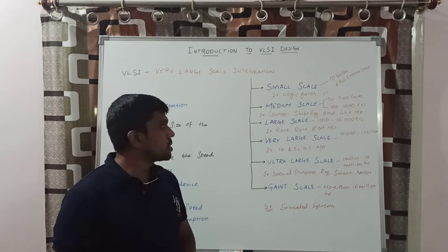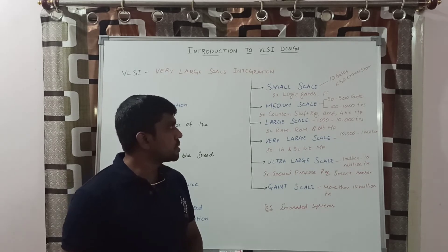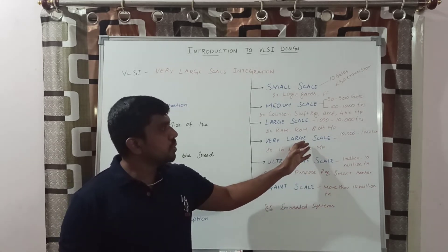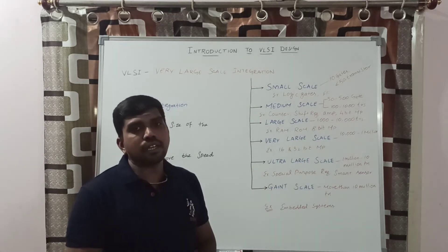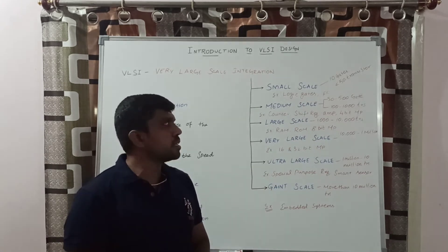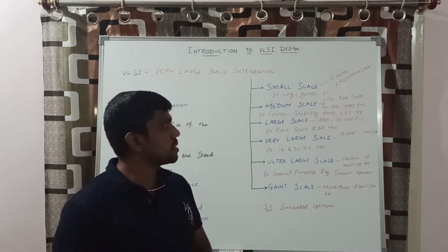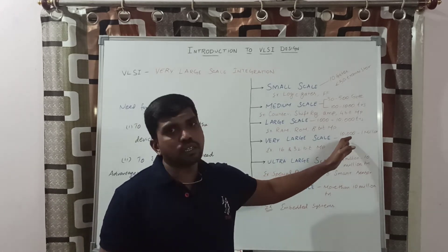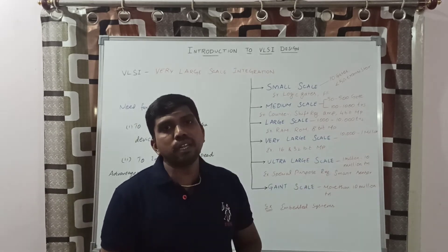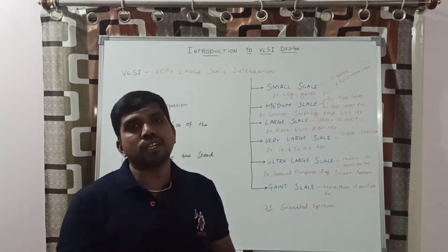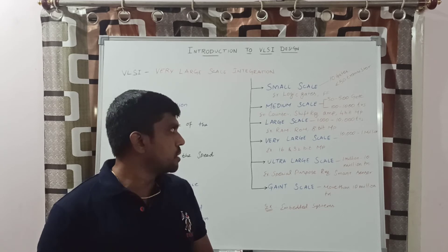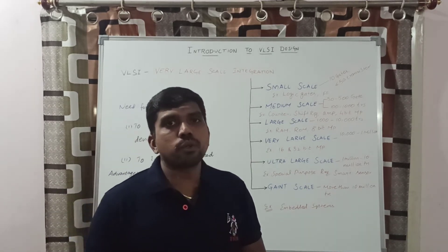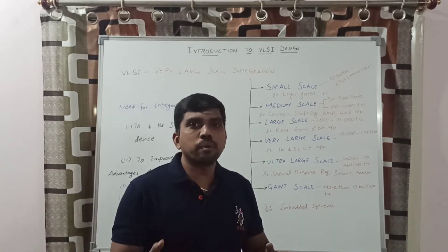The next one is Very Large Scale Integration (VLSI). In VLSI, the amount of transistors gradually increases compared to LSI. Here we use 10,000 to 1 million transistors accommodated in a single chip, used for developing 16-bit and 32-bit microprocessors for performing different functions and controlling peripheral devices.